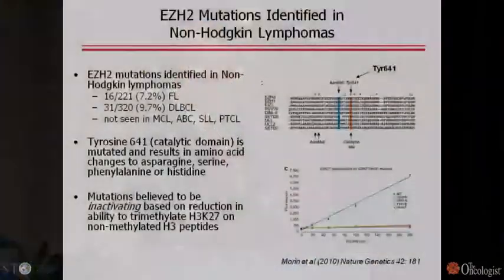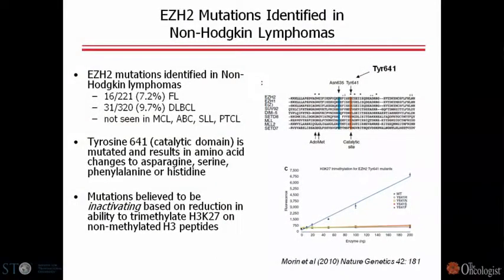A couple of things were problematic from an enzymology perspective. First, all patients identified with this mutation were heterozygous—they had one copy of the wild-type enzyme and one copy of the mutant. That doesn't quite make sense in terms of a loss-of-function interpretation. The other thing is that it's very unusual to see loss of function so exquisitely selective with a single amino acid change. So we decided to look at this in greater detail.